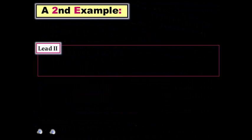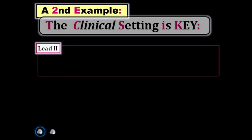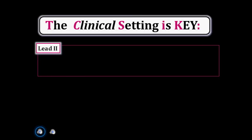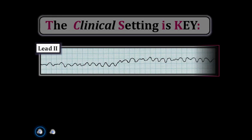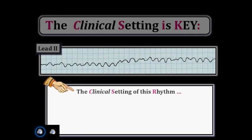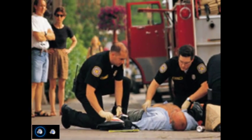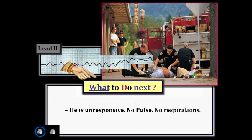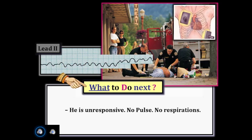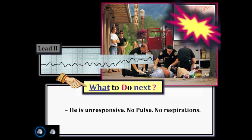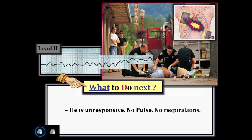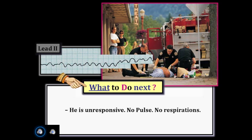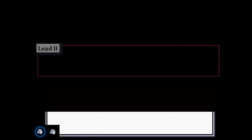Let's look at one more example. What if your patient had just collapsed, the paramedics are on scene, they find the patient to be unresponsive, with no pulse and no respirations? The answer, of course, is to defibrillate the patient as soon as possible, as we have just defined the conditions of cardiac arrest.